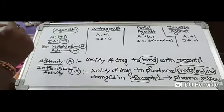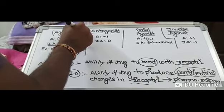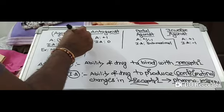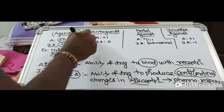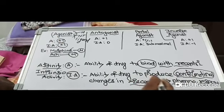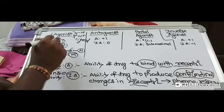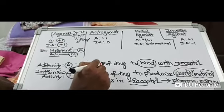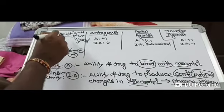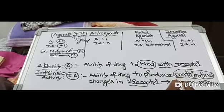An agonist is a drug, hormone, neurotransmitter, or ligand that has the capability to bind with the receptor and also has the capability to produce conformational changes in the receptor. Agonist has affinity of plus one and intrinsic activity of plus one — meaning it has the ability to bind with the receptor and to produce conformational changes to elicit pharmacological responses.